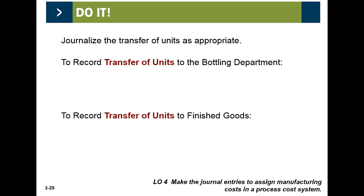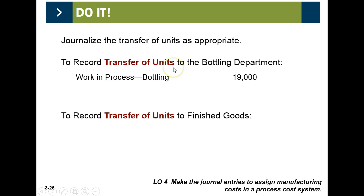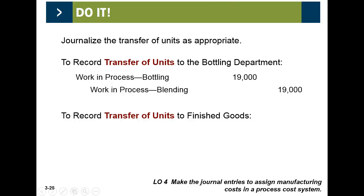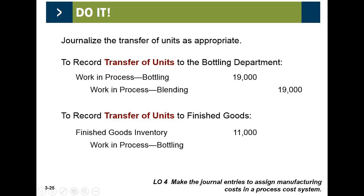How do we transfer the units? How do we take the units out of the blending process and put them into bottling? We debit work-in-process bottling and credit work-in-process blending. Once the blending is done, we remove it from blending and debit it into bottling. It's all assets — all inventory accounts going through a system, a flow. Then once they're done, we take it out of bottling and put it into finished goods.